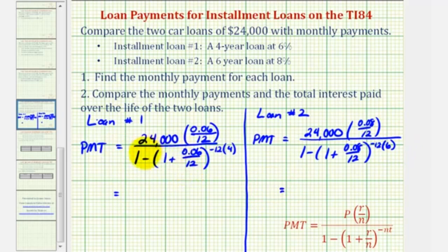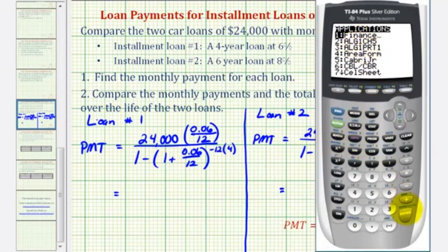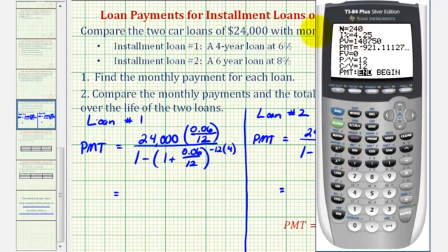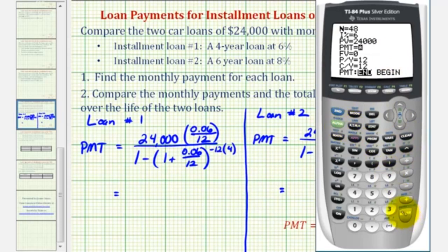Since we've already done several of these by hand, we're going to use the finance menu of the graphing calculator. We'll press finance apps, enter for the finance menu, and enter for TVM Solver. Capital N is the total number of payments. Loan one is a four-year loan paid monthly, so N is four times twelve, or forty-eight. The interest rate is six percent. The present value is $24,000. The future value will be zero when the loan is paid off. Payments per year are twelve, compounds per year is also twelve, and payments are at the end of the month. We'll go back up to PMT, clear it, and press alpha enter to solve. The monthly payment is $563.64.